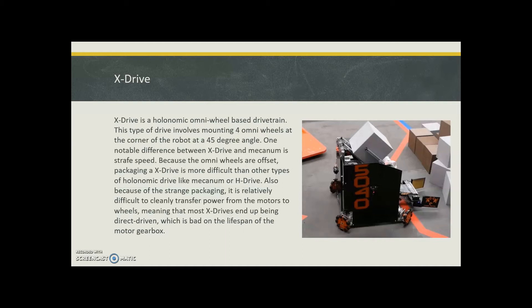The big difference between X-Drive and mecanum is the strafing speed. Omni wheels are offset, so the packaging of an X-Drive is more difficult than other types of holonomic drives like mecanum or H-Drive.